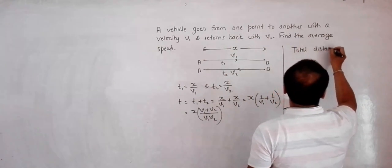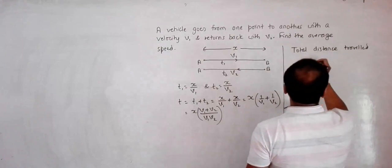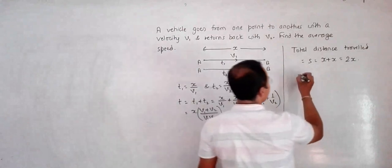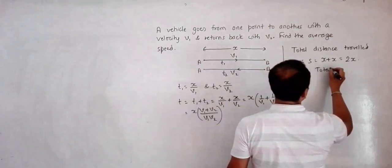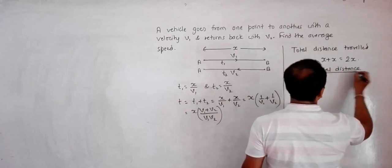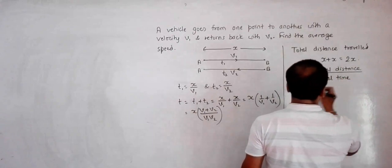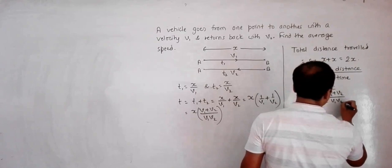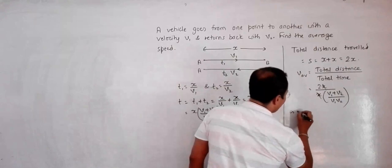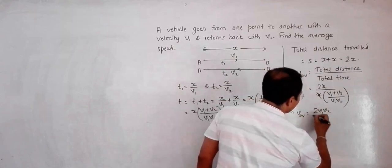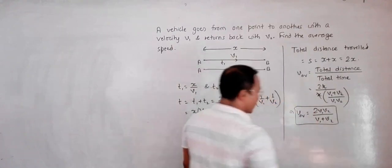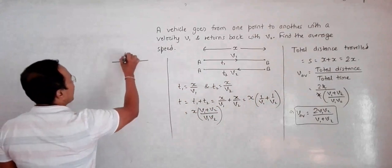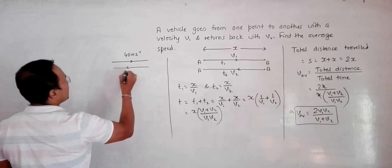The total distance traveled is x plus x, which equals 2x. The average speed is total distance divided by total time, which is 2x divided by x(v1 + v2)/(v1·v2). The x cancels, giving us v_average = 2v1v2/(v1 + v2). This is definitely not equal to the simple arithmetic average of v1 and v2.